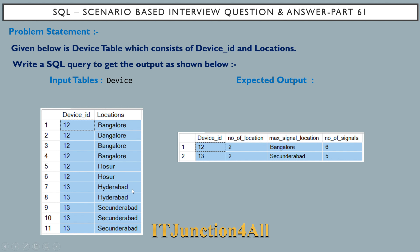Now let's come back to the problem statement. It states that given below is a device table which consists of a device_id column and a locations column, and what is expected is we have to write a SQL query to get the output as shown. In the output table we have a device_id column which contains the distinct device IDs from the input table.